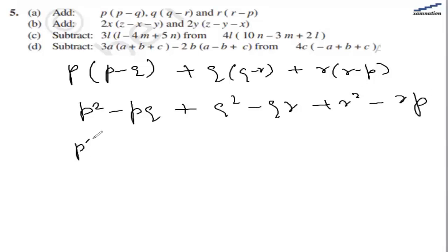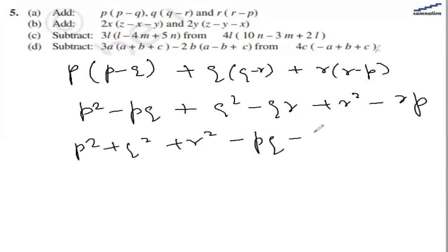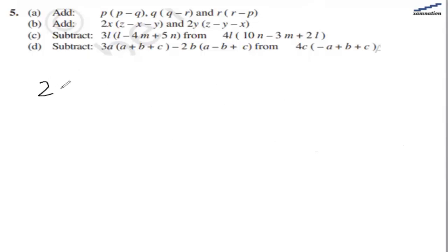After opening the brackets, we get p² plus q² plus r² minus pq minus qr minus rp. That is the answer for the first part. For the second part, we have 2x(z minus x minus y) plus 2y(z minus y minus x).